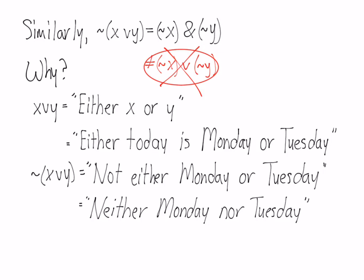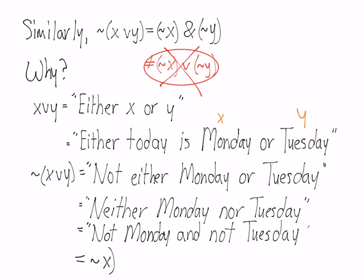'It's NOT either Monday or Tuesday' is usually said 'neither Monday nor Tuesday.' That means it's NOT Monday and NOT Tuesday, which can be written in logical notation as NOT x AND NOT y. In other words, if x stands for Monday and y stands for Tuesday, the negation of the disjunction becomes a conjunction of negations.